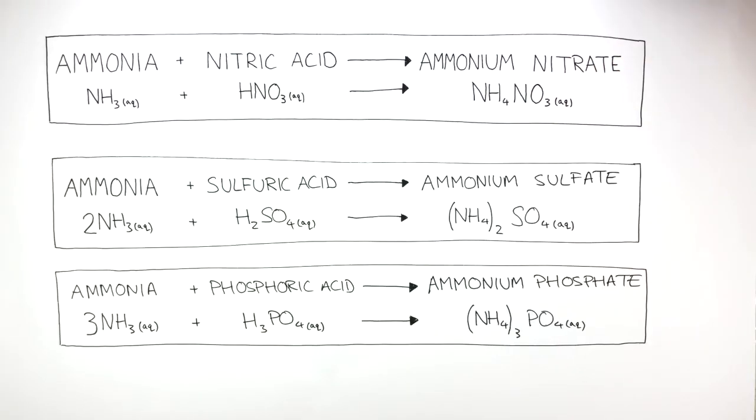These next two reactions show how ammonia can react with sulfuric acid to form ammonium sulfate, and then also how ammonia can react with phosphoric acid to form ammonium phosphate.